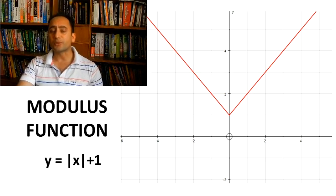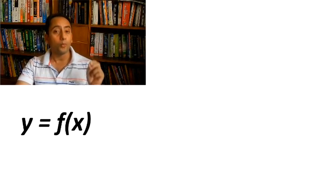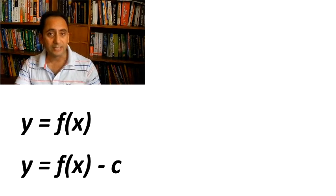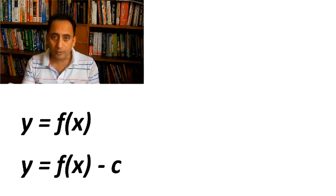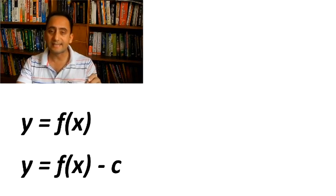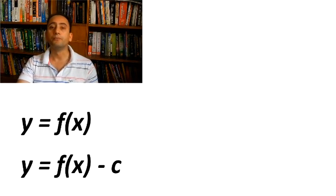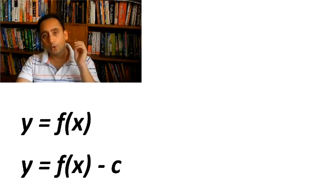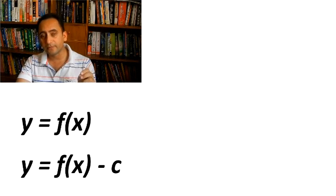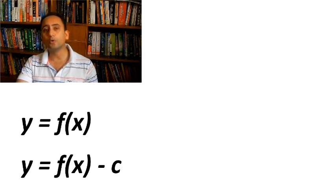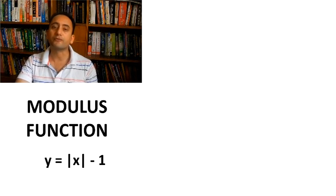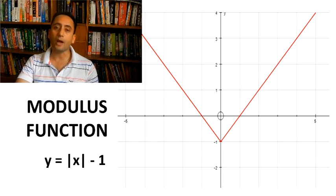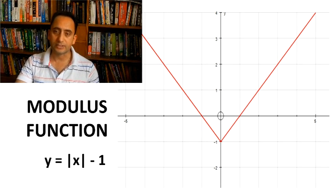If we subtract c from the right-hand side — that is y = f(x) - c — the graph will shift vertically downwards by c units, where c is a positive number. For example, if we have y = |x| - 1, the graph of |x| will shift vertically downwards by 1 unit.